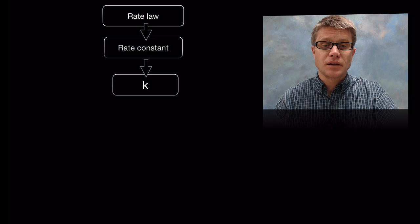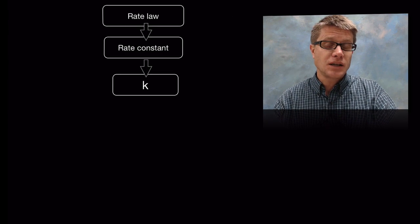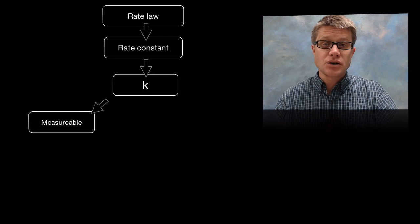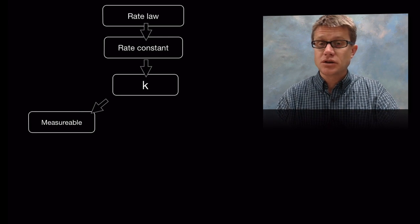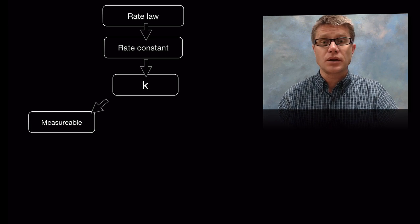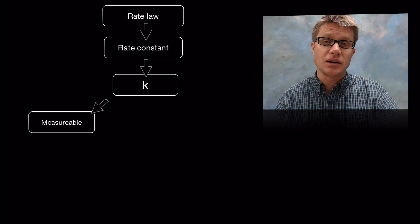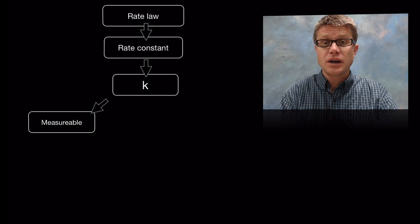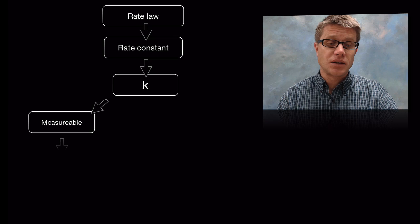And so if we look at the rate law, the rate law is going to contain a constant. We'll call that K. And that K is measurable. In other words we can gather a bunch of experimental data. We can look at it and we can work backwards to figure out what K is. A really easy way to do that in AP chemistry is to measure the reaction rate over time and then use that to figure out K.